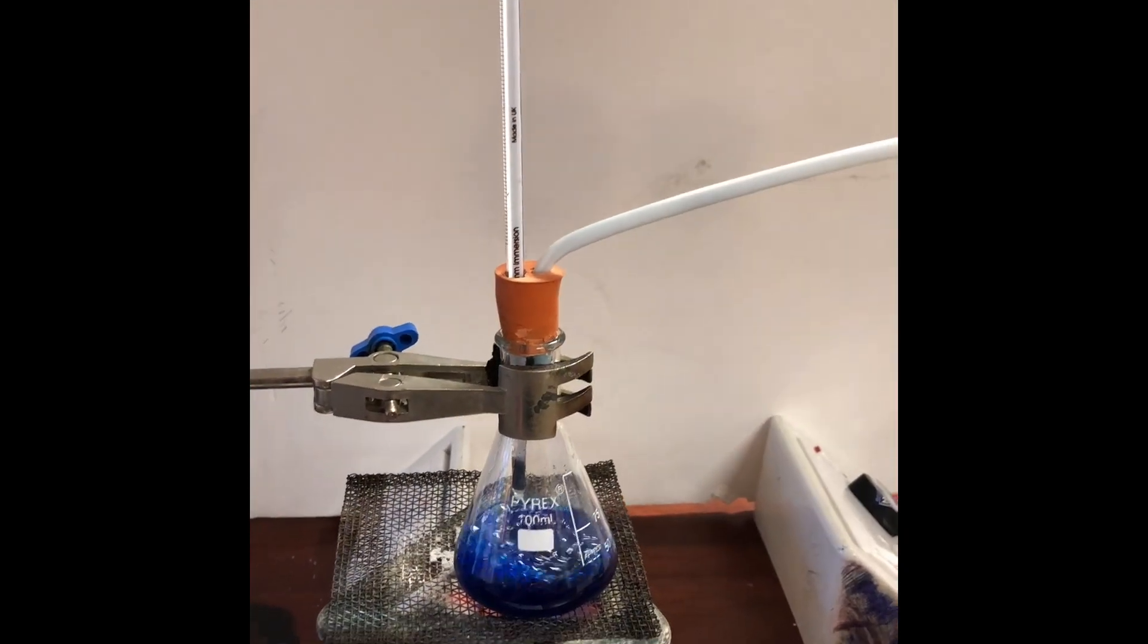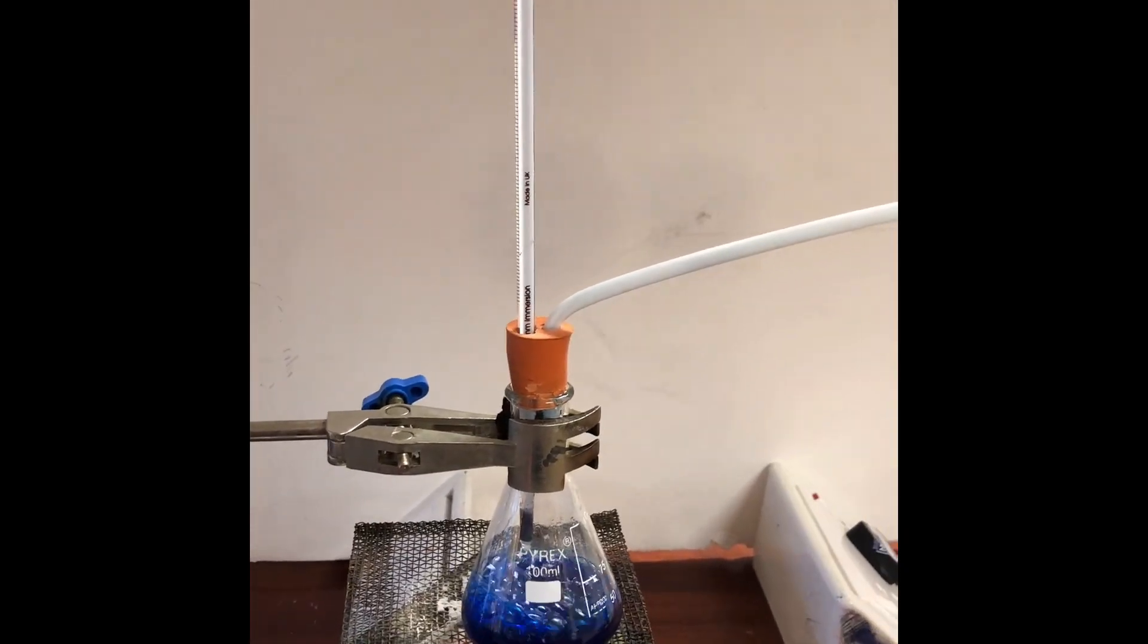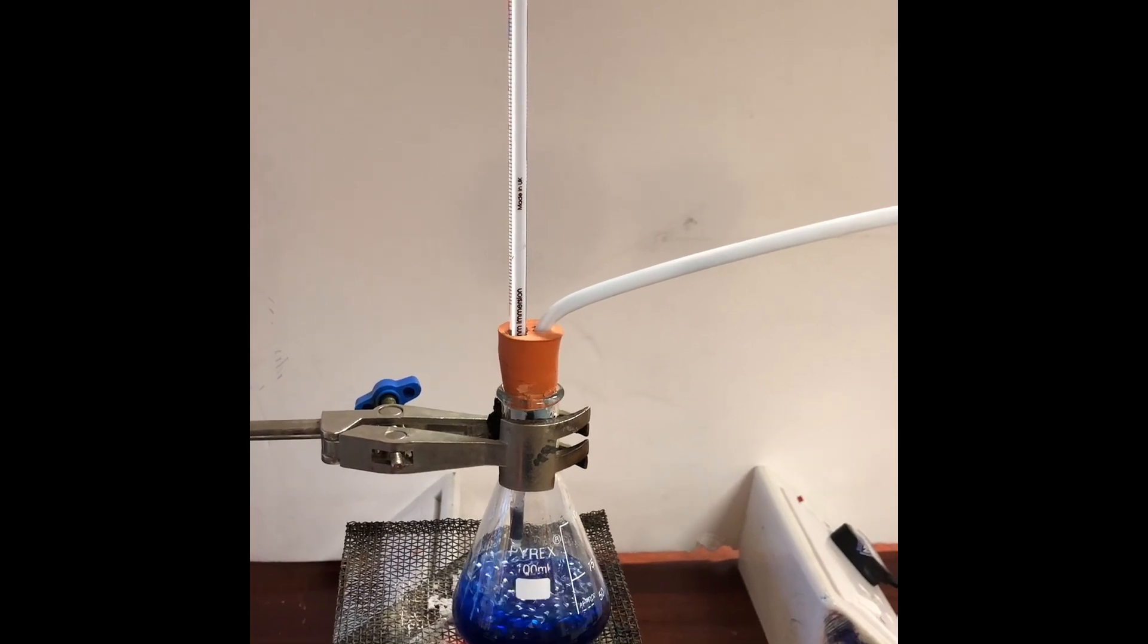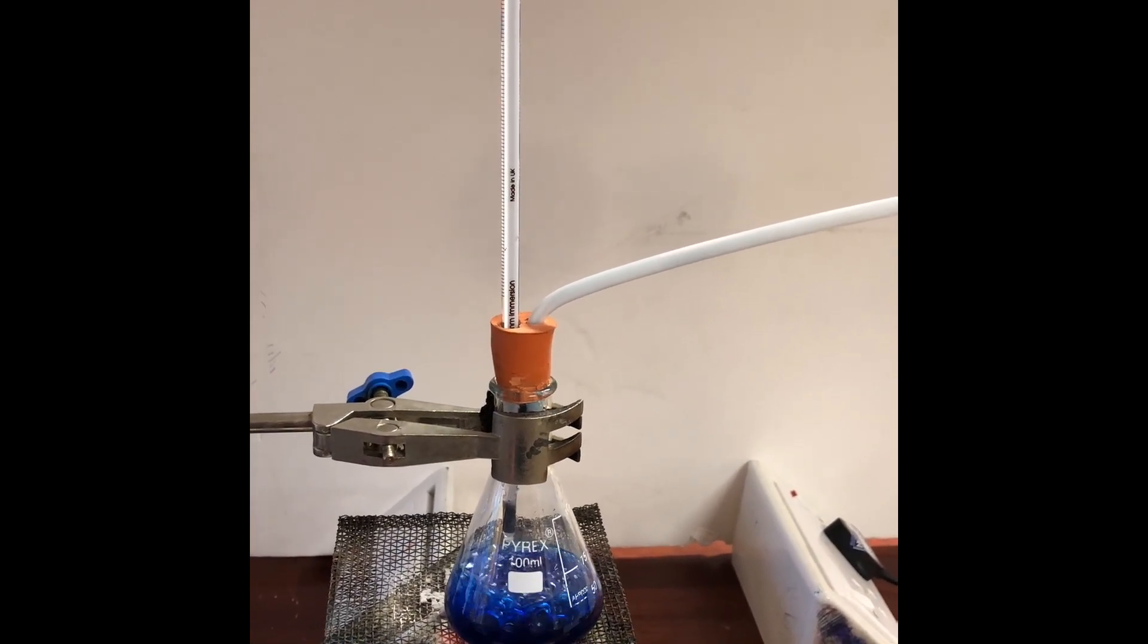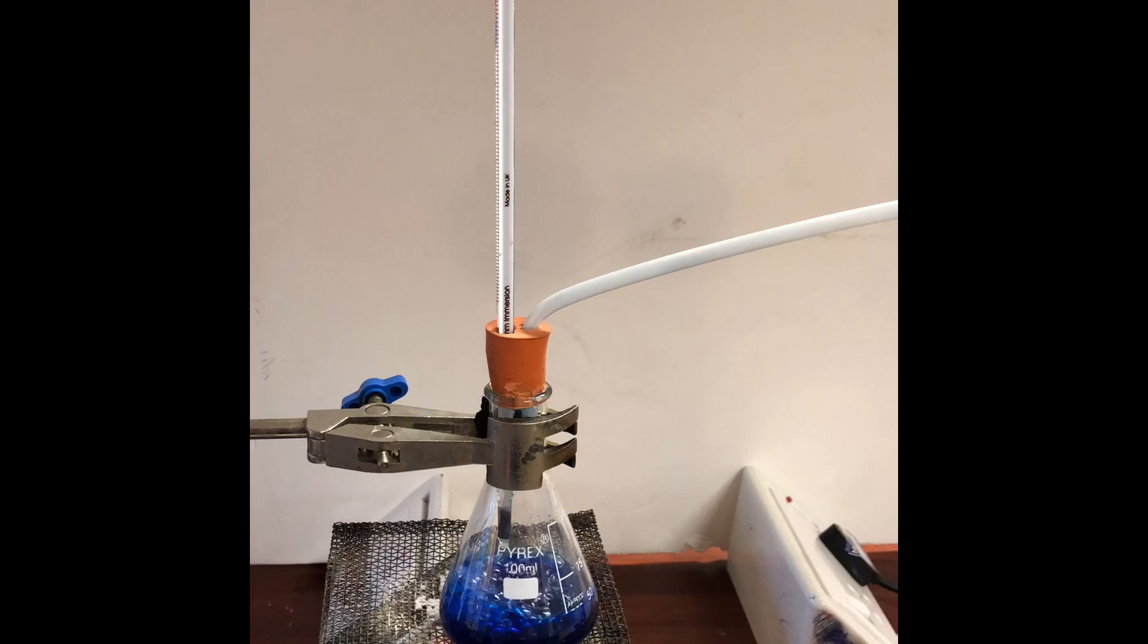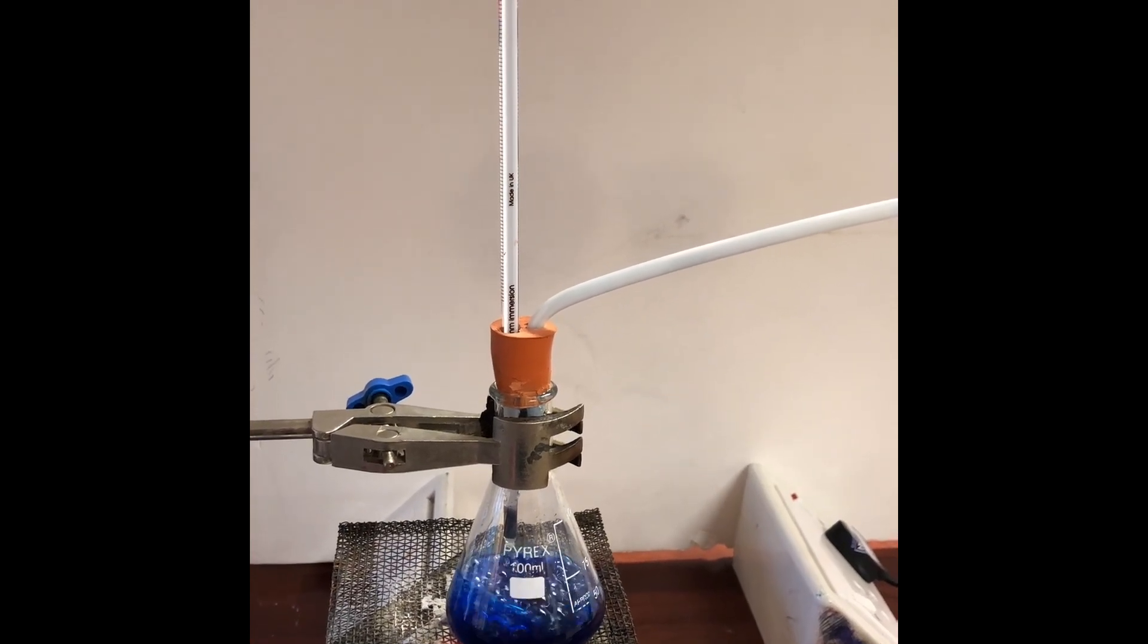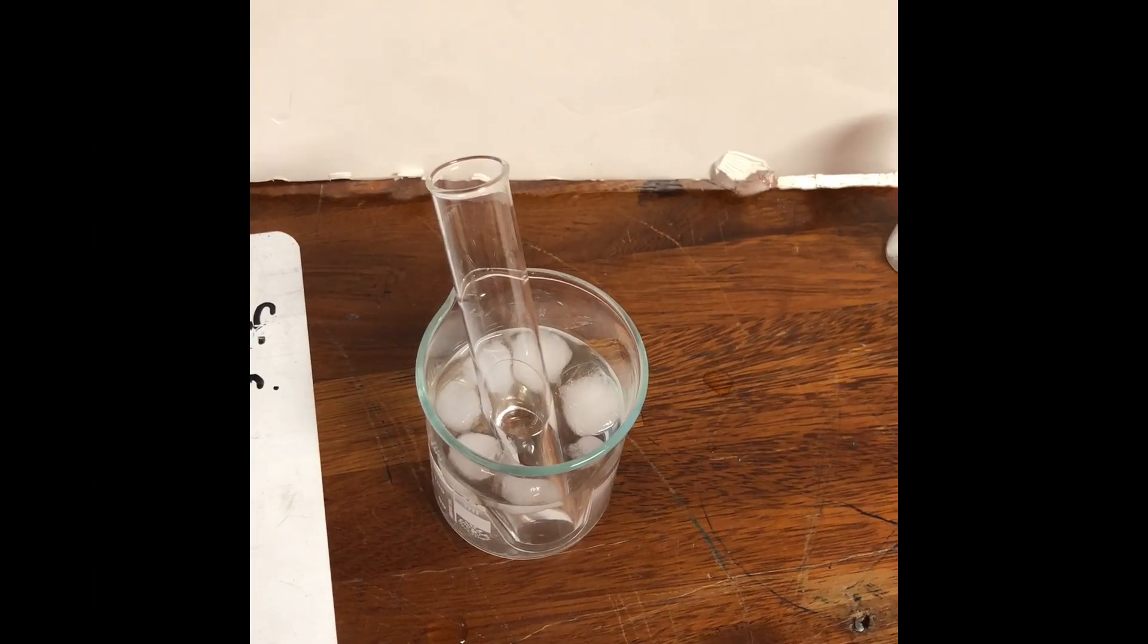Being careful to make sure that the temperature on the thermometer isn't above 100 degrees, because that's the temperature that water boils and we want the water to come off. If we allow it to get hotter than that, then the ink will start to boil off and that would defeat the point. Let the experiment run for a while now.